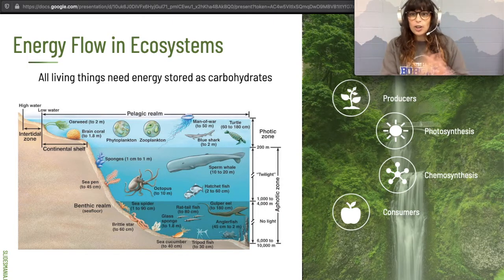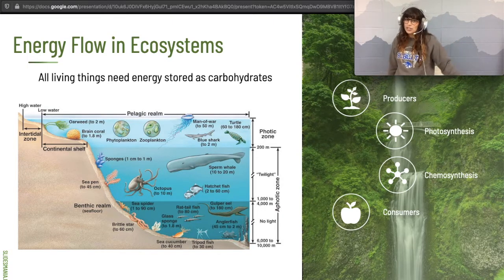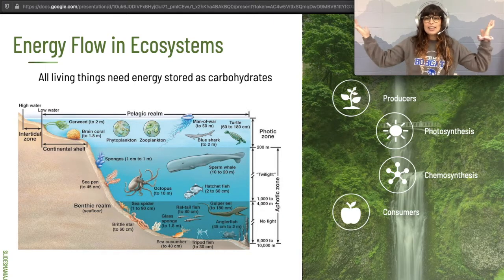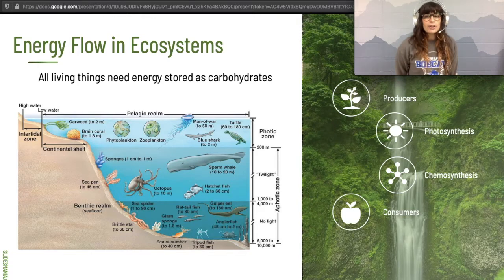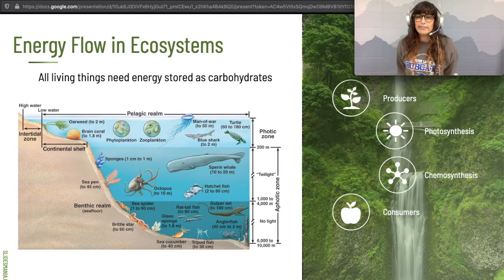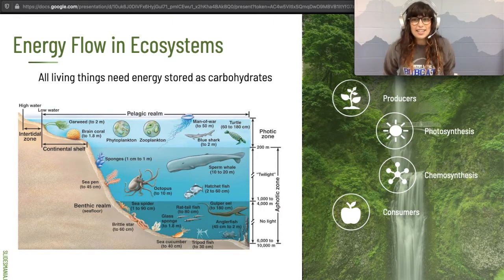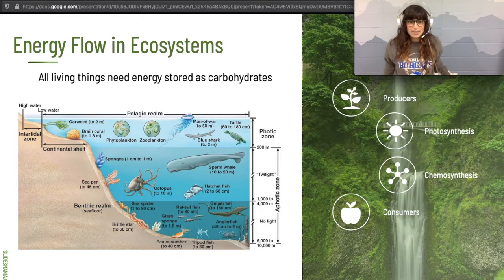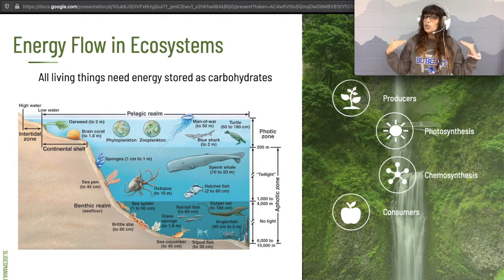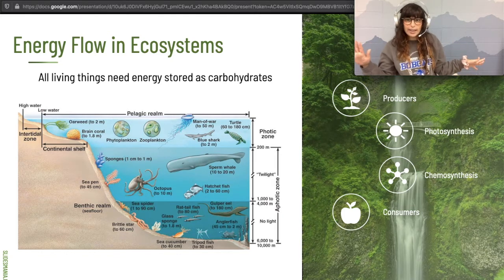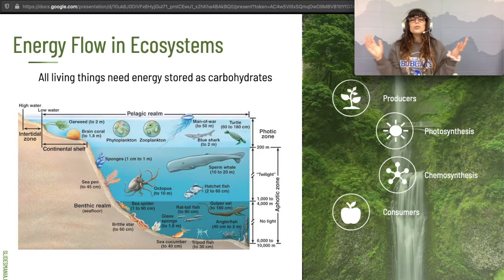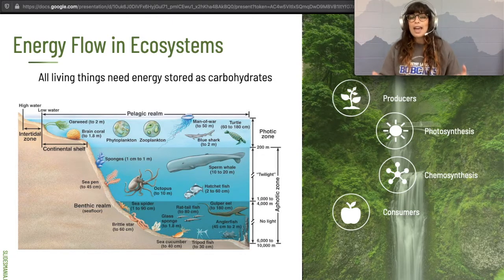Every living thing needs energy stored as carbohydrates. Some organisms solve this problem by making their own carbohydrates, and others solve it by eating someone who made the carbohydrates. Producers — plants and algae — produce their own carbohydrates. There are two ways: photosynthesis, which uses sunlight energy and converts it into carbohydrates, and chemosynthesis, performed by very small organisms at the bottom of the ocean where there's no sunlight, using chemicals from deep sea volcanic vents.